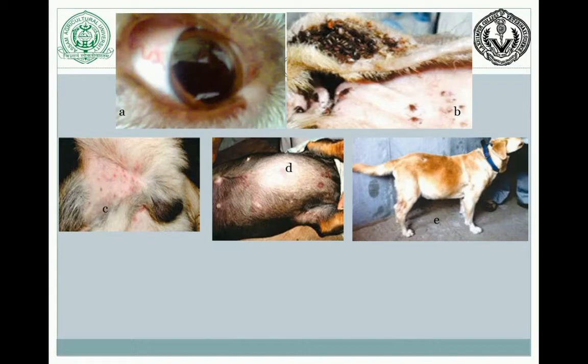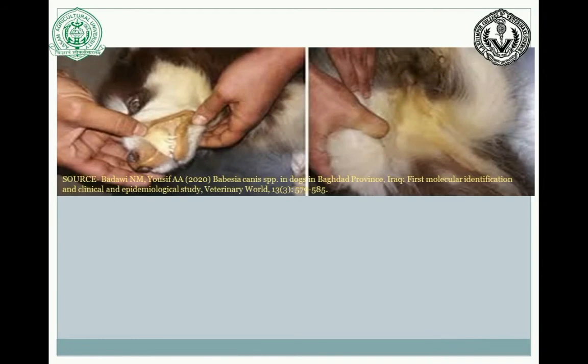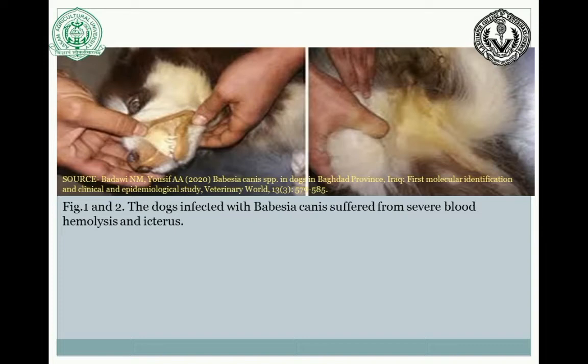Here are five pictures. Picture A shows ocular bleeding. Picture B shows severe tick infestation in the pinna of the ear. Picture C shows petechial hemorrhage spots on the inguinal region of the infected animal. Picture D shows large circular red spots on the ventral abdomen. Picture E shows ascites. Another image shows icterus — the mucous membrane is icteric — in an animal infected by Babesia canis.